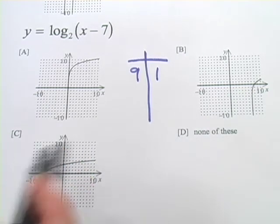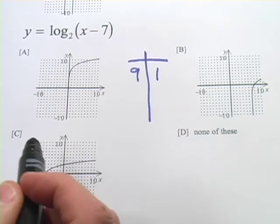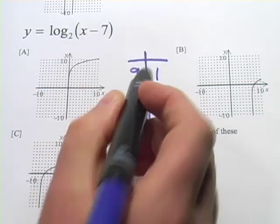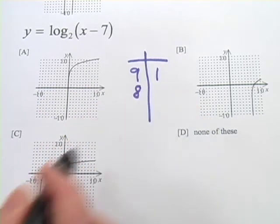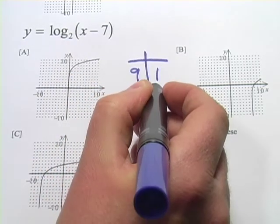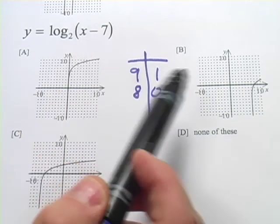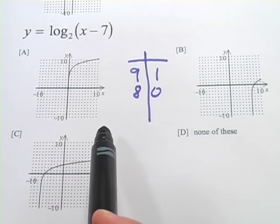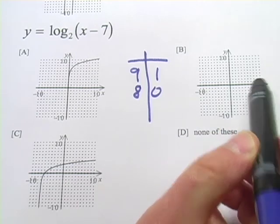It doesn't look like it's on A or C, so it might be B or D. Let's see if we can get this to equal 1. So that would be 8 minus 7 is 1. So 8 and 0 would be the power that turns 2 into 1. So 8, 0 should be on this graph, and it looks like 8, 0 is on this graph.